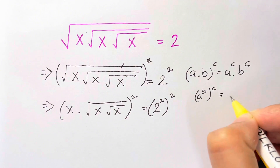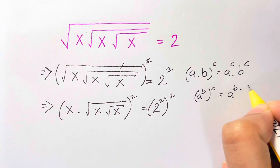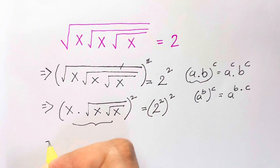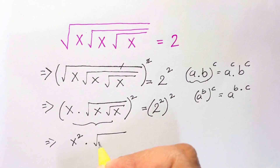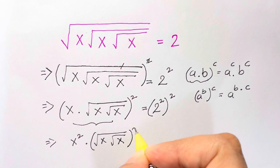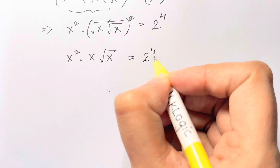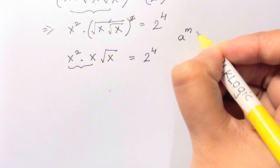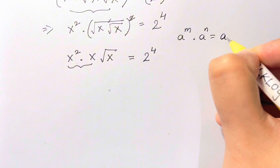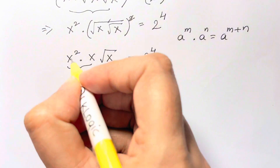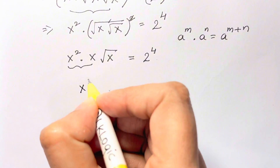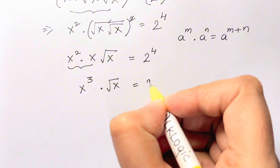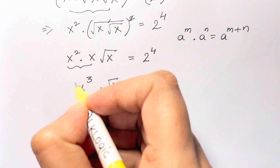It's similar to (a^b)^c — a power to a power, you multiply them. So we have x squared times the whole part squared equals 2 to the power of 4. This is in the form a^n times a^n; when bases are the same we add the powers. 2 plus 1 is 3, so we get x cubed times root x equals 2 to the power of 4.